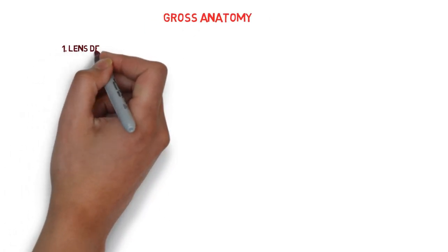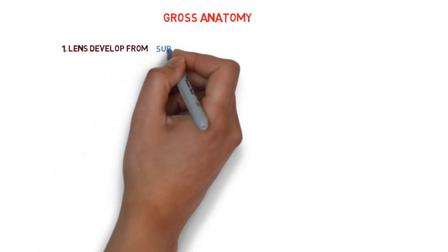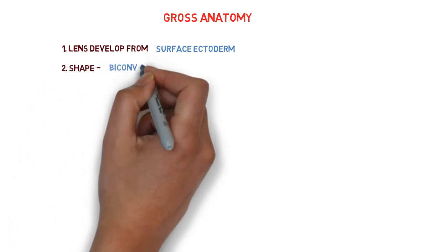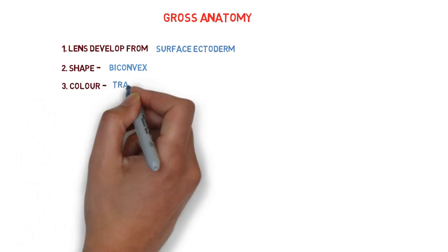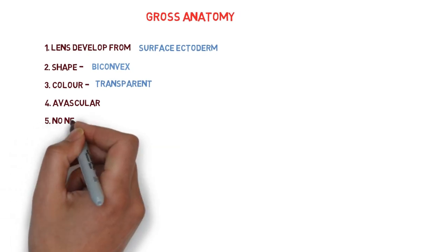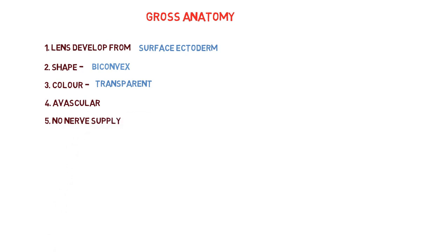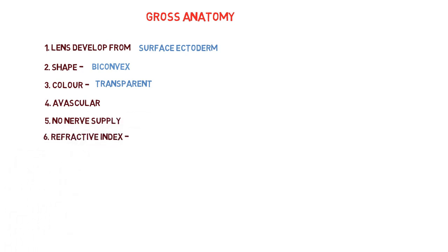We must know these 10 points. The first one is the lens is made up of surface ectoderm. The shape of the lens is biconvex. The color of a lens is transparent because there is no blood supply to the lens—that is, it is avascular in nature. There is no nerve supply.